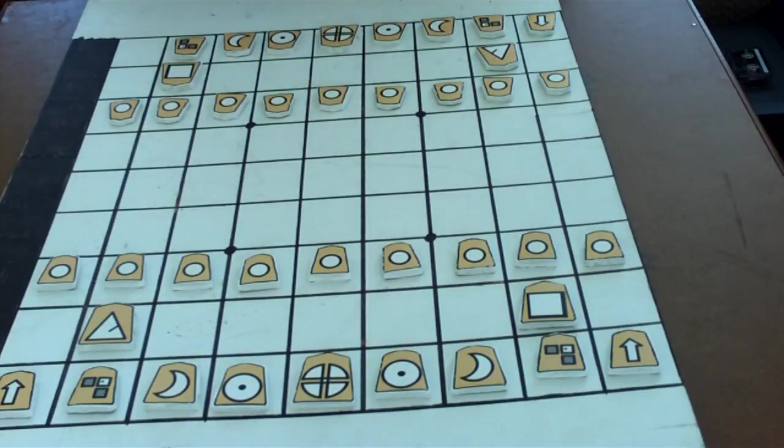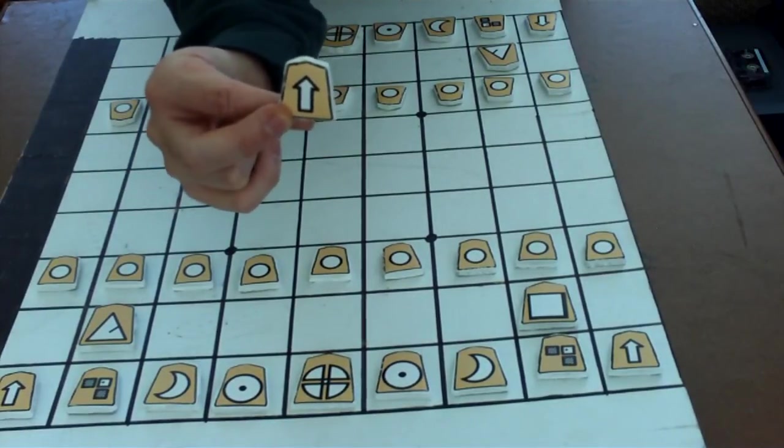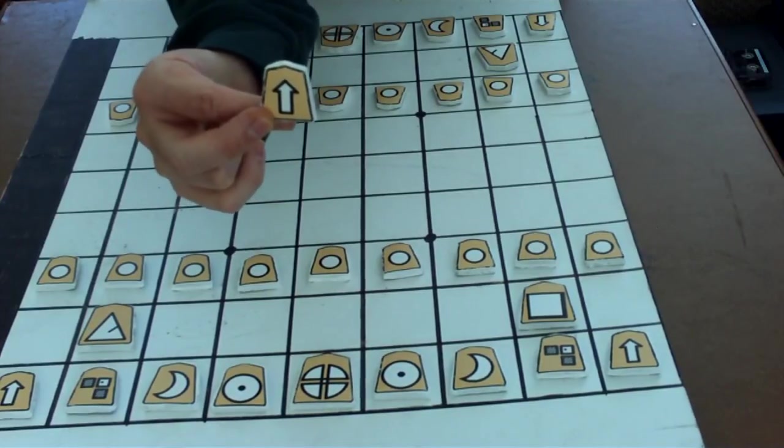Now we get to the pieces which have no corresponding pieces in chess. This is a lance, it's represented here by an arrow, and it moves directly forward like a rook. It cannot move sideways or backwards.